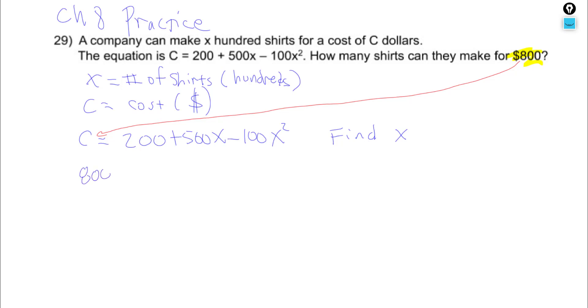I'm going to take the cost out, plug in the $800. And now I have an equation with one variable, only X's. And I want to get X by itself.